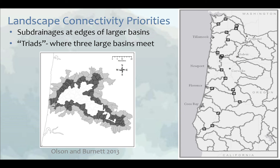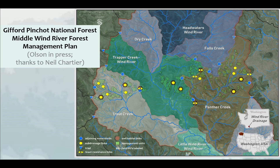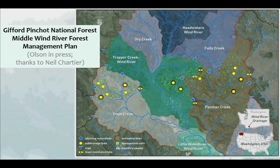Putting it all together: Neil Chartier from the Gifford Pinchot National Forest and I were talking earlier this year and came up with a plan for the Middle Wind watershed — and hopefully expanding to the Upper Wind — that they're developing a management plan for now. We have triangles showing triads where three different watersheds come together, circles at other watershed boundaries, and brown areas where owls are — connecting to owl cores is another notion within a watershed. You can see we don't have dots everywhere, but here is a template of priority areas within a watershed as you're doing management planning.